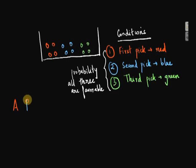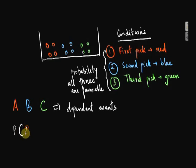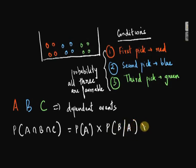So if we sum all this up here, when we have 3 dependent events A, B and C, the intersection of all of this will be given by P(A) into the conditional probability of B given A into the conditional probability of C given A and B.